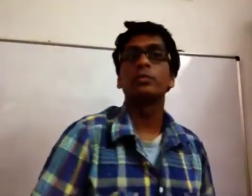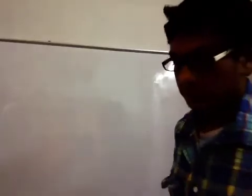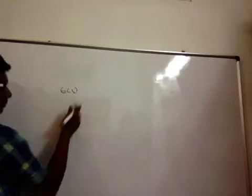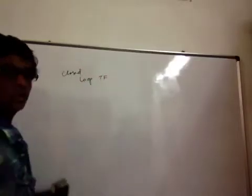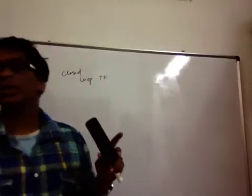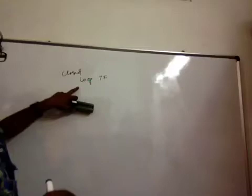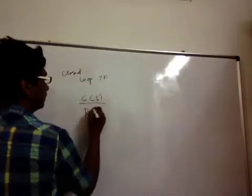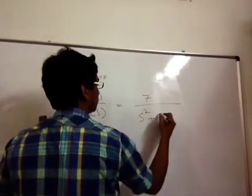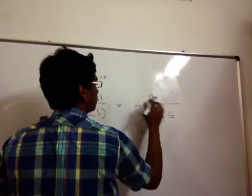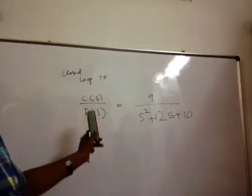I'll solve an easy equation first and then we'll go to complex ones. Let me take the first one which is already in the required form. So my question is — let me directly take C(s) by R(s). This is the closed loop transfer function. I'm already taking a closed loop transfer function, not an open loop transfer function, keep that in mind. So C(s)/R(s) = 7 / (s² + 4s), and I'll take this as 9, giving 12s + 10. So this is my closed loop transfer function.